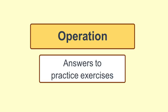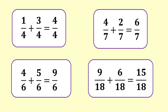Here are the answers for the additional problems: 1 quarter plus 3 quarters equals 4 quarters; 4 sevenths plus 2 sevenths equals 6 sevenths; 4 sixths plus 5 sixths equals 9 sixths; 9 eighteenths plus 6 eighteenths equals 15 eighteenths.